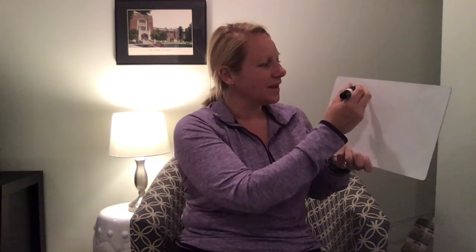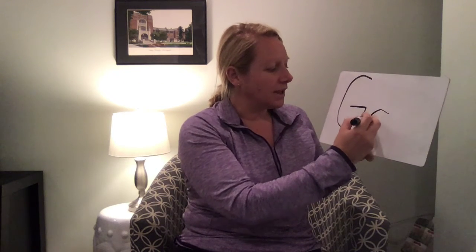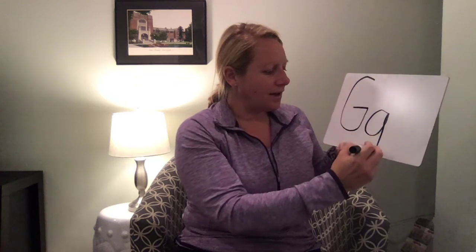G looks like this. Uppercase: goes around all the way down to the bottom, back up and pull in — uppercase G. This is lowercase G: pull around like a C, back up and down and around and back up. Repeat after me: G, game. Let's do it one more time: G, game. Now let's make some words that have this letter in it.